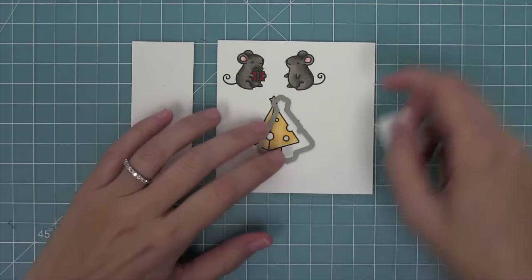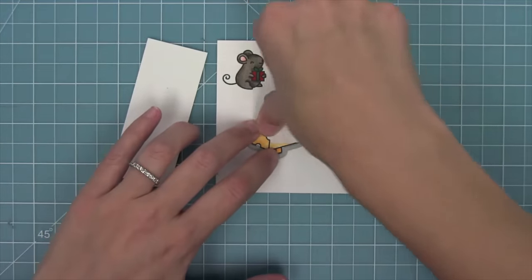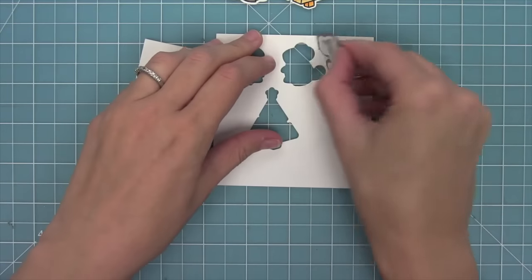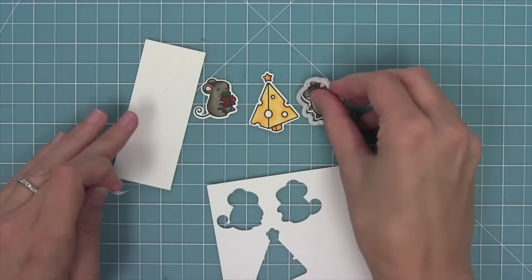I'm going to use the coordinating dies, line those up with my stamped images, and run them all through my die cut machine. I just love seeing them pop out of the dies. They're just so cute with that cute little white border around them.